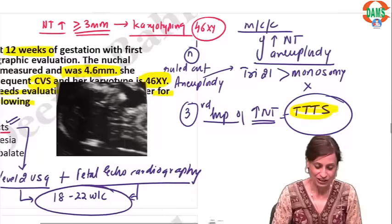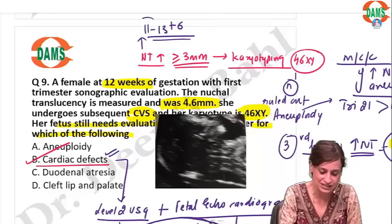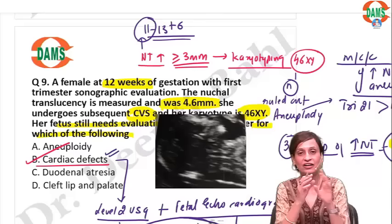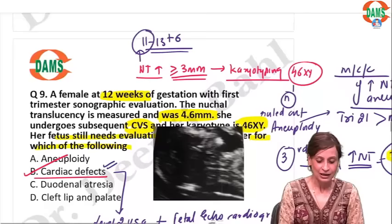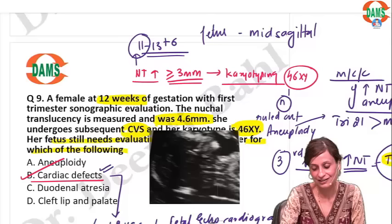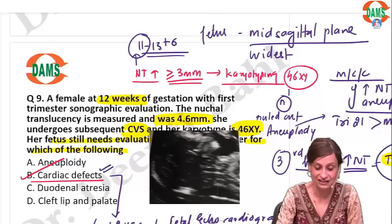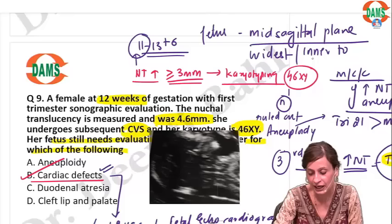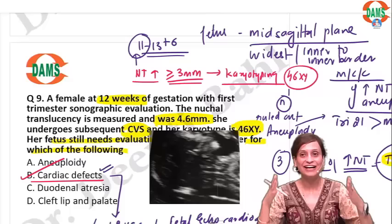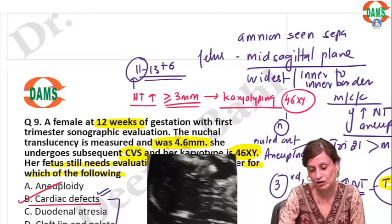What is the ideal time to measure NT? The ideal time is 11 to 13 plus 6 weeks; if you must mark one answer, it is 11 weeks. When doing an NT scan, the baby has to be in the mid-sagittal plane. The measurement is taken at the widest area from inner to inner border. Amnion should be seen separately from the nuchal translucency.